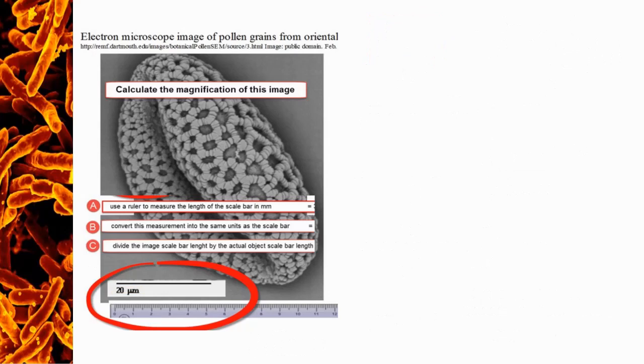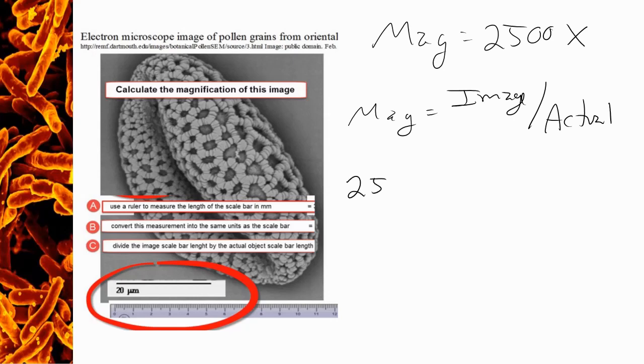Now that we know the magnification of this image is 2,500 times, we can also use that information to now calculate the actual size of the organism that's in the image. Remember again, magnification equals image size over actual size.